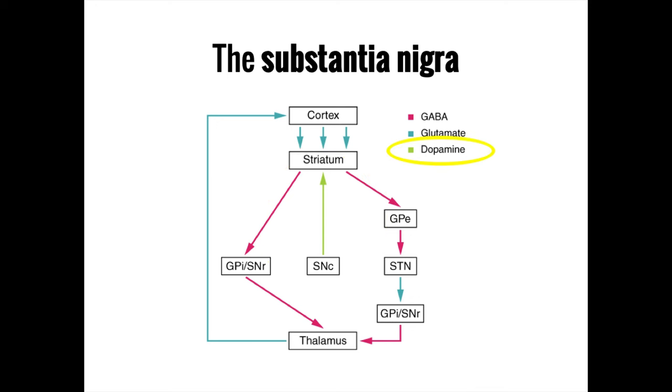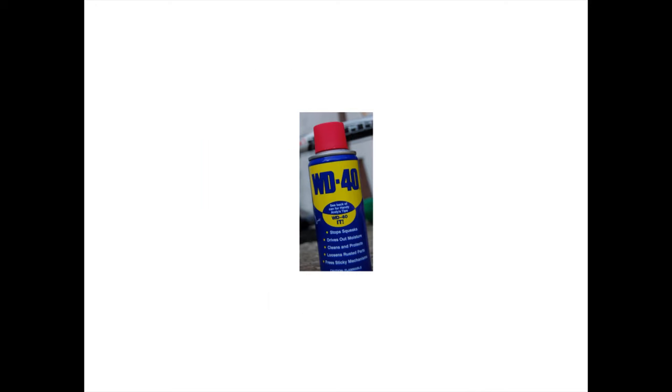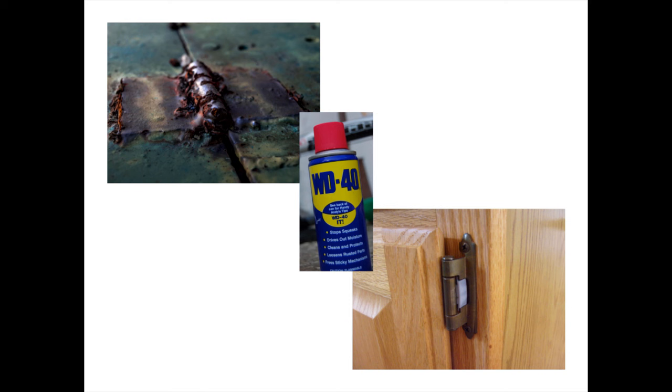The substantia nigra uses the neurotransmitter dopamine to influence the basal ganglia. Dopamine is best thought of as being like grease, or WD-40. It does not cause movements, but rather facilitates them. Just like you would use WD-40 to turn a rusted over hinge into a smooth gliding one, dopamine makes someone's movements fast, fluid, and smooth.